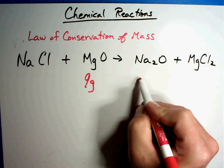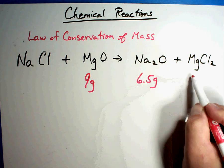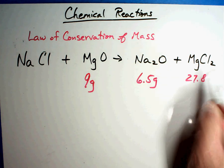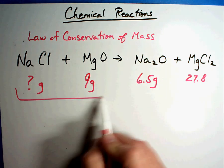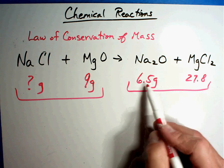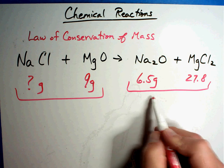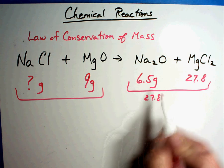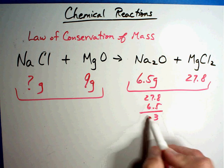Let's say they tell you that you have 9 grams of this, and that you have 6.5 grams and 27.8 grams. How many grams of this do you have? Well, the same is true - both sides have to equal each other. Since you have two numbers on this side, let's add them together. If I add 27.8 and 6.5... 13, carry the 7, 6, 13, 14...